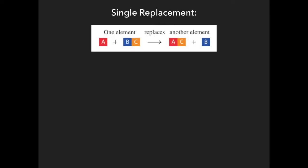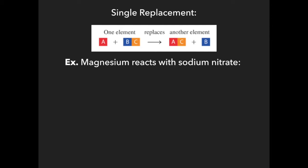The third type of reaction is a single replacement reaction. One element that is by itself reacts with a compound, and that element goes in and kicks out one of the original elements in the compound — so B ends up by itself and A forms a compound with C. For example, magnesium reacts with sodium nitrate. Sodium has a plus one charge and nitrate has a minus one charge, so sodium nitrate is NaNO₃.